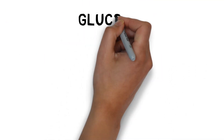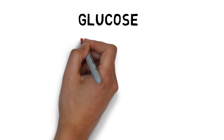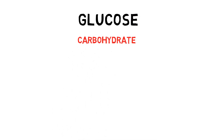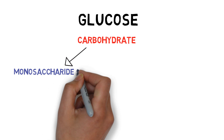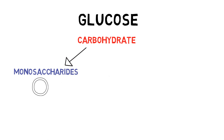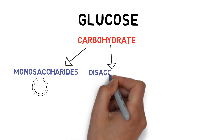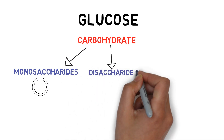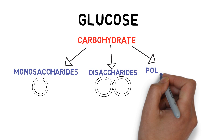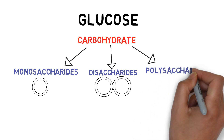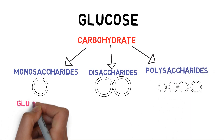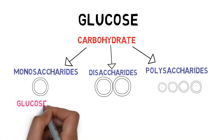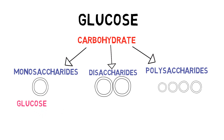Glucose is a carbohydrate. There are three types of carbohydrates: monosaccharides which contain one unit, disaccharides which contain two units of monosaccharides, and polysaccharides which contain lots of units of monosaccharides. Glucose is a monosaccharide which contains six carbon atoms.